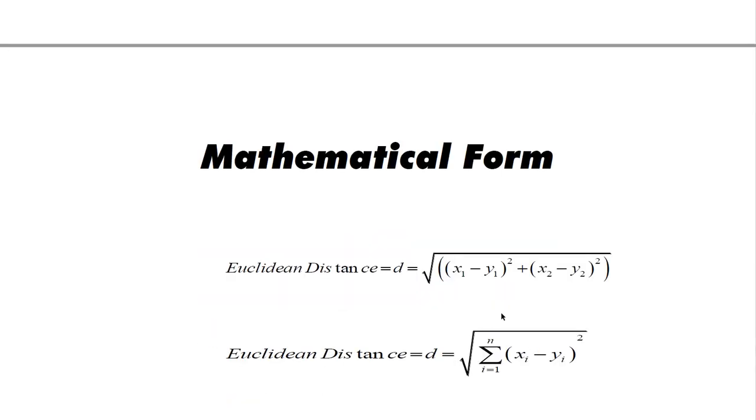Here is the mathematical form of Euclidean distance: D equals square root of (x1 minus y1) squared plus (x2 minus y2) squared. This formula is used for two points. If we have point A with two values y1, y2 and we have point B with values x1 and x2, for two points we can use this formula.